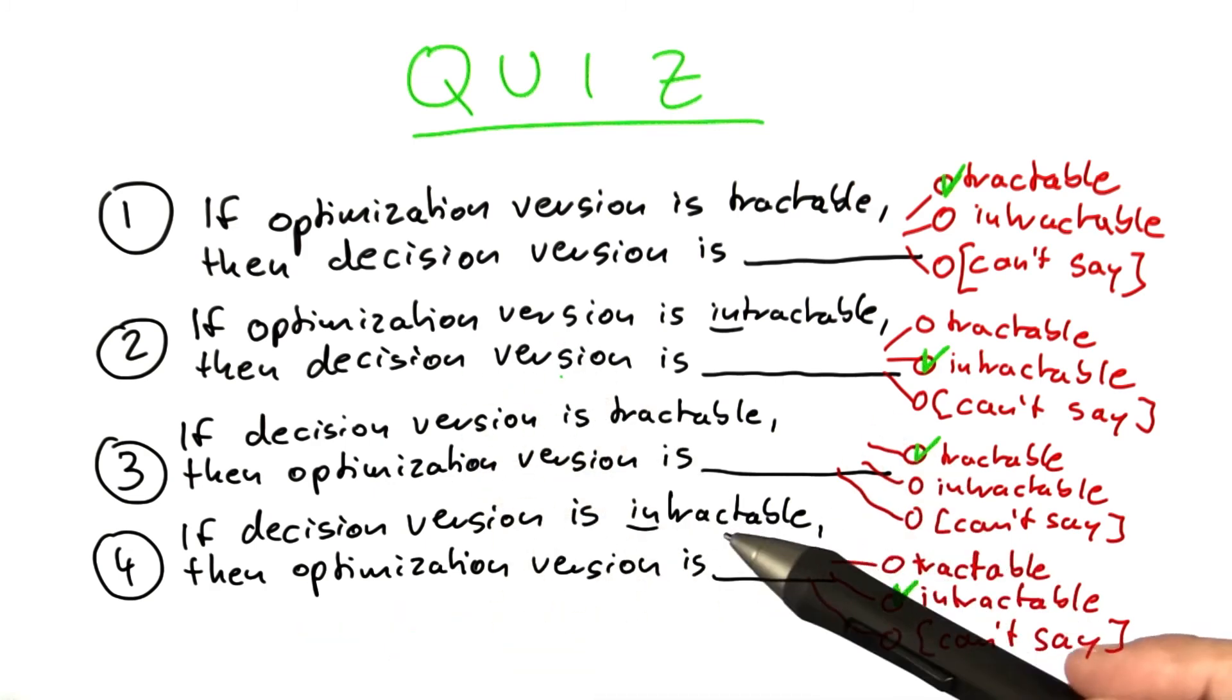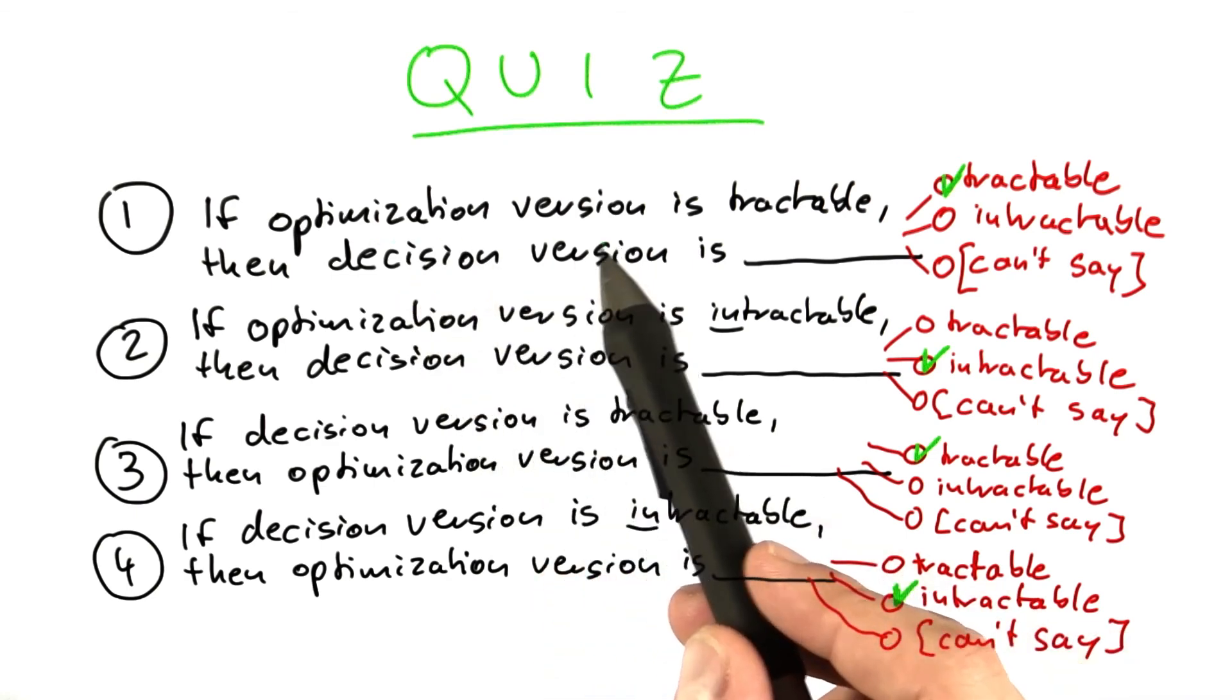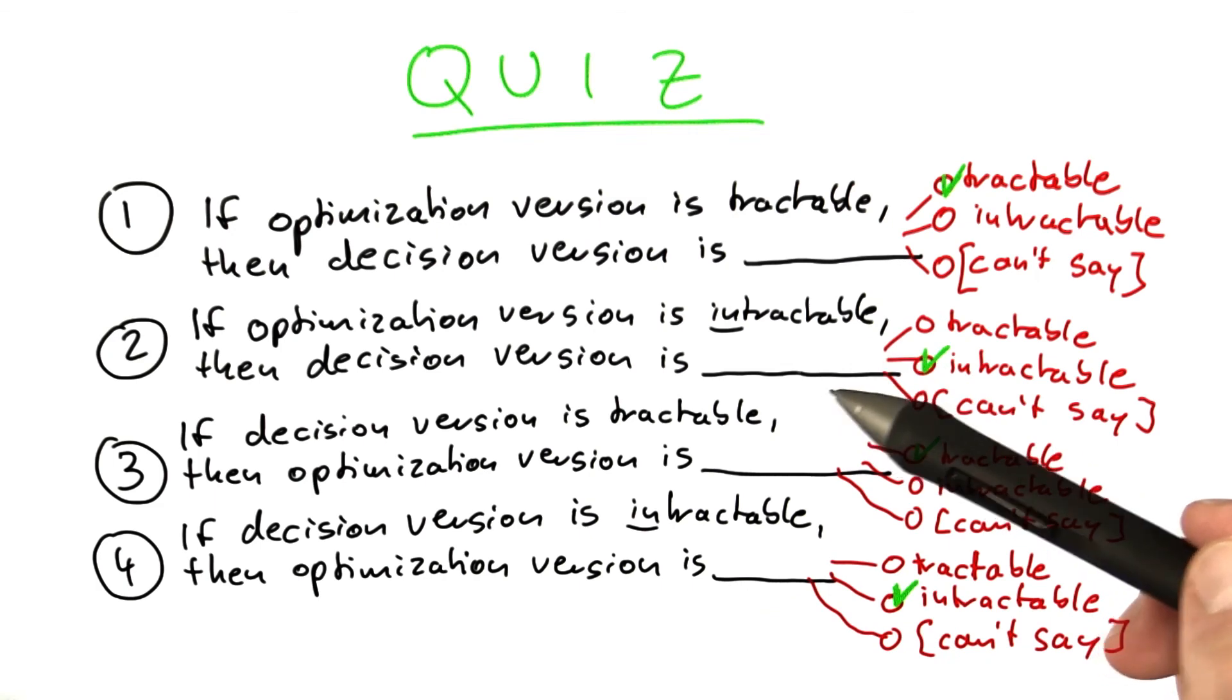you can also solve the optimization version. This is not that obvious to see, but for now, you can keep in mind that optimization versions of a problem and decision versions of a problem behave more or less the same with respect to tractability or intractability.